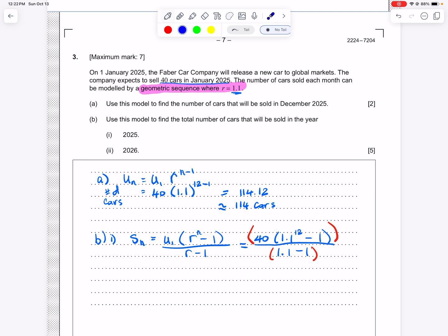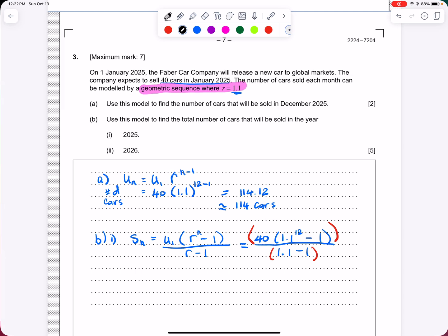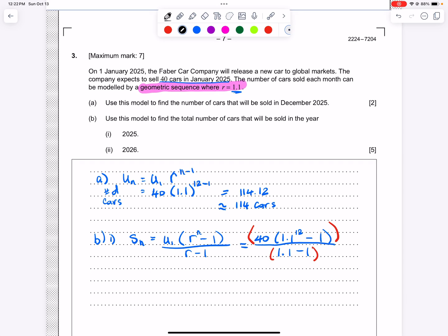All right. Once you do that, your answer should be equal to 855 cars. All right. So that is the number of cars sold in 2025 in all. That's all 12 months.